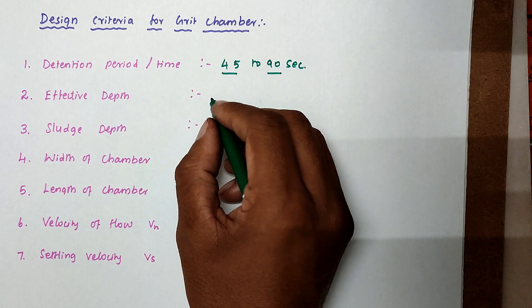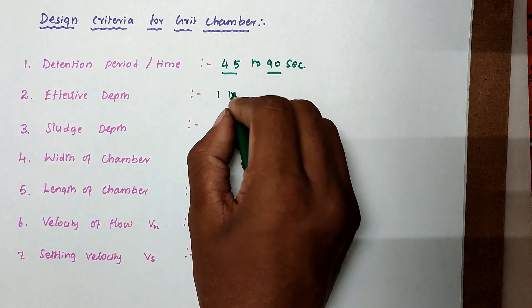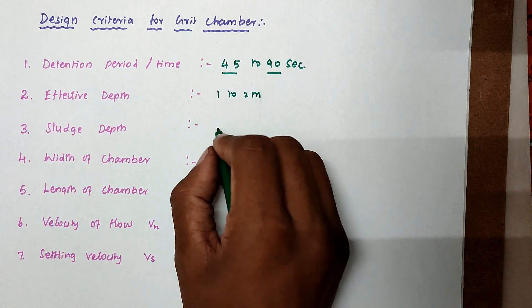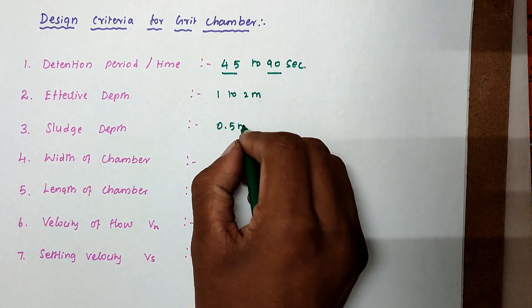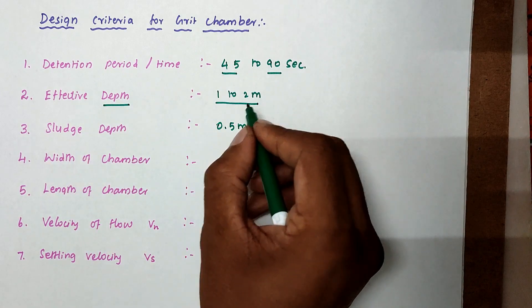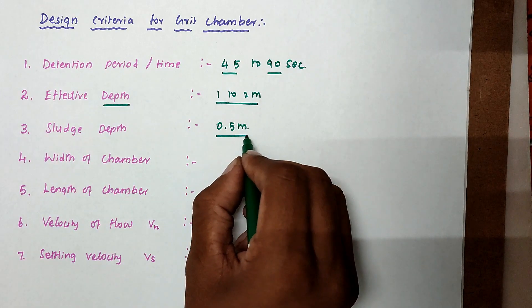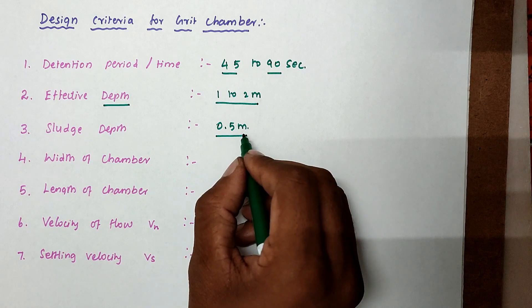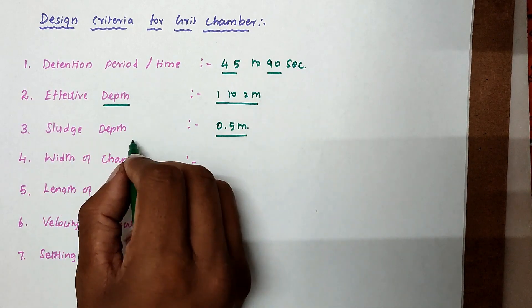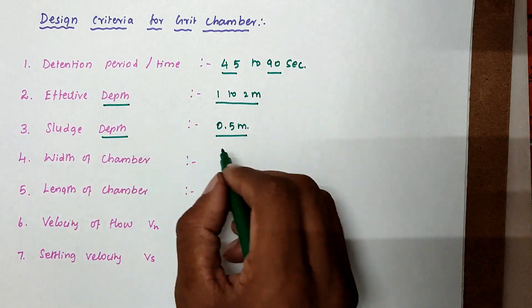Then effective depth of grid chamber is 1 to 2 meters. Sludge depth is 0.5 meter. So we know the effective depth is 1 to 2 meters, then sludge depth should be maximum of 0.5 meter. Above 0.5 meters we can't accept the sludge depth because regular cleaning is required.